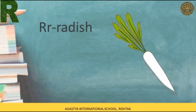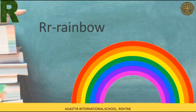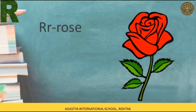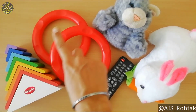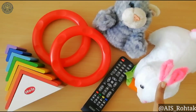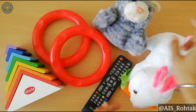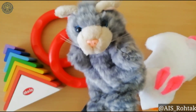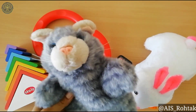Radish. R sounds R. R says R. Rocket. R says R. R sounds R. Rainbow. R sounds R. R says R. Rose. And here students, I have collected few objects of letter R. Rabbit. R says R. R sounds R. Rat. Cute little rat. R says R. R sounds R.